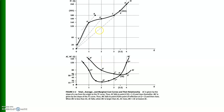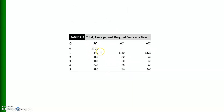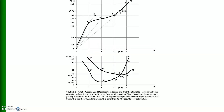In this diagram, the upper diagram shows the total cost curve. The lower diagram shows two curves: this curve is marginal cost and this curve is average cost. These two diagrams are the geometrical representation of the schedule — if we graph the schedule, we get this geometrical representation of total cost, marginal cost, and average cost.